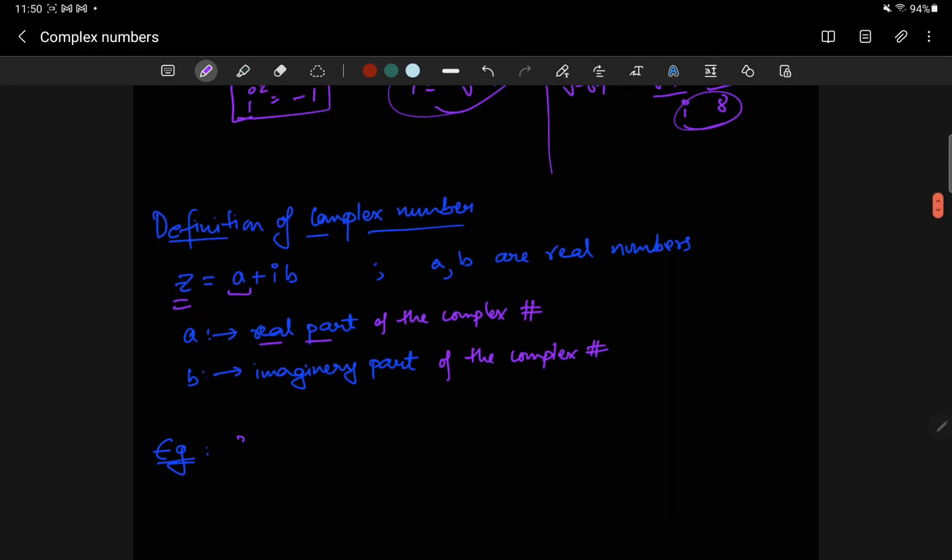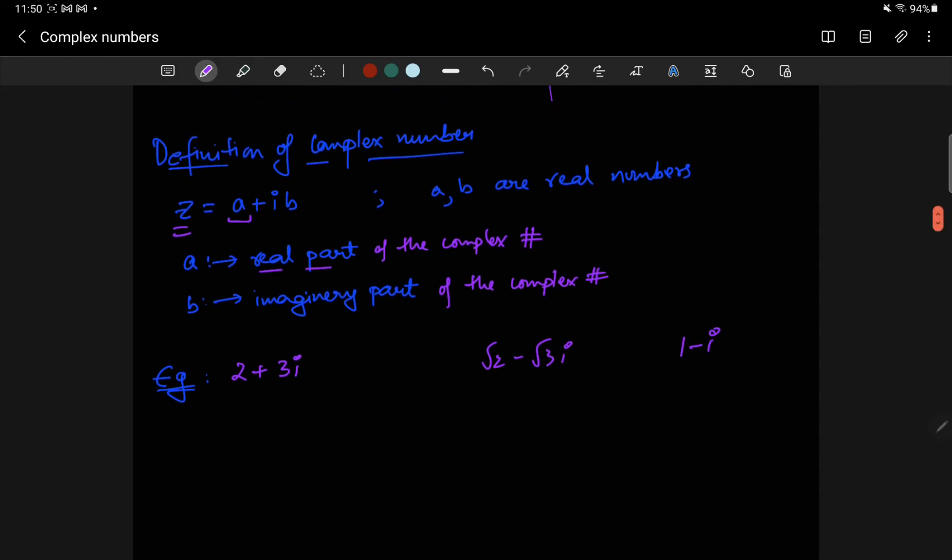Here are some examples. Something like 2 plus 3i, root 2 minus root 3i, 1 minus i. So here, if you look at this one, then 2 is the real part, and 3 is the imaginary part. So when we write the imaginary part, or when we say this is the imaginary part of this complex number, we don't include i in it. We just include the number in front of i, just the coefficient.